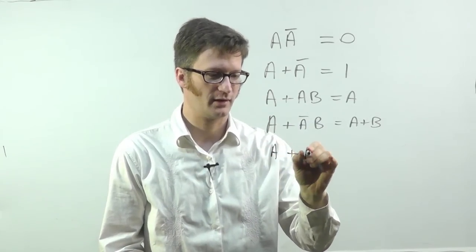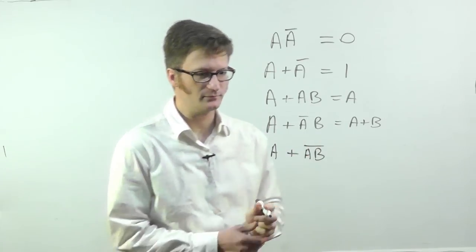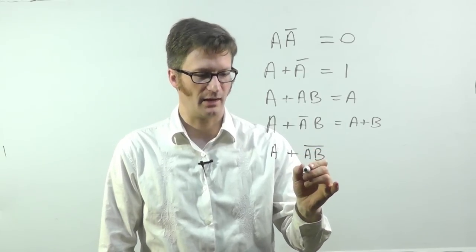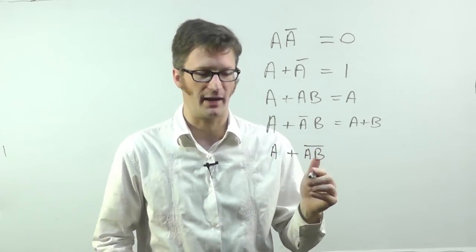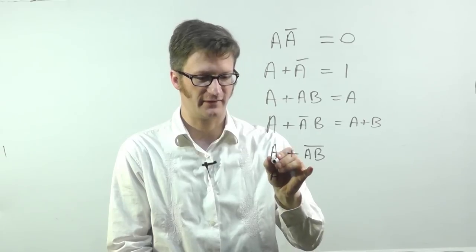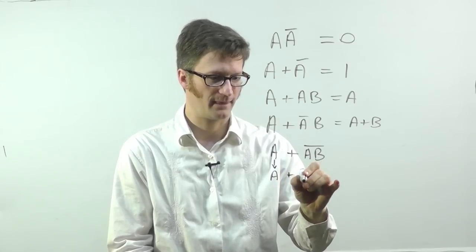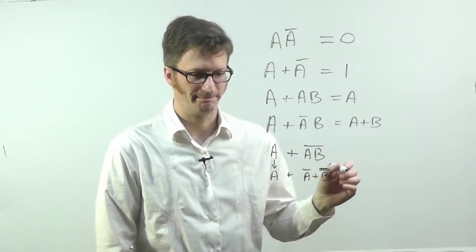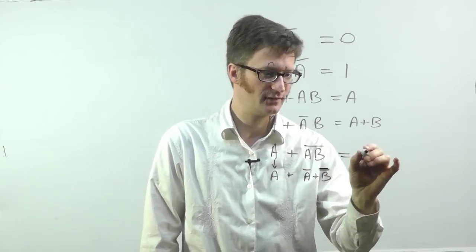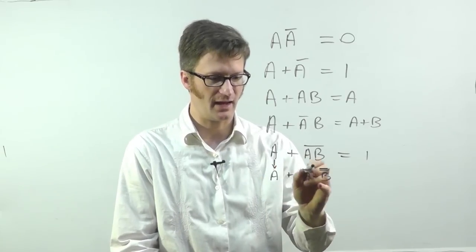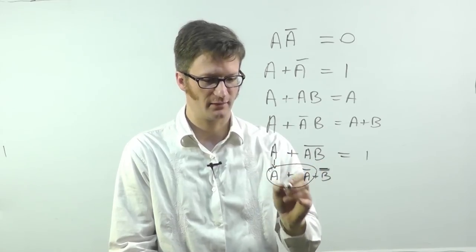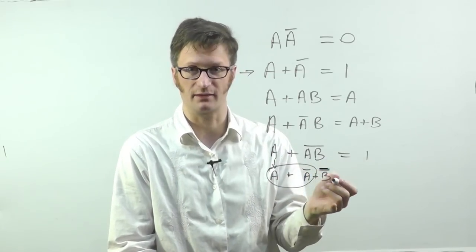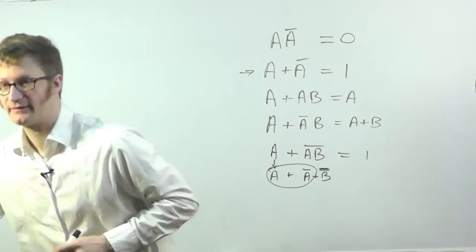All right. A or A B bar. All right. This one I'm going to apply De Morgan's theorem that I just showed you. So I'm going to invert the individual terms and swap and for or. So this is just this A dropping down or A bar or B. And, oh, I didn't say what that's equal to. It's equal to one. So A or A bar, right here, always equals one, according to this one. And one or anything equals one. So that's the proof of that.